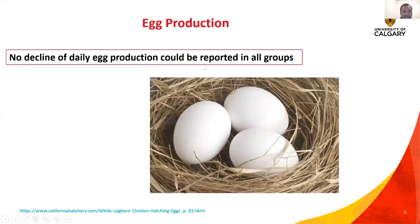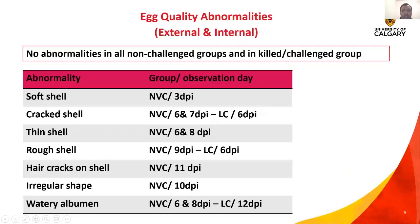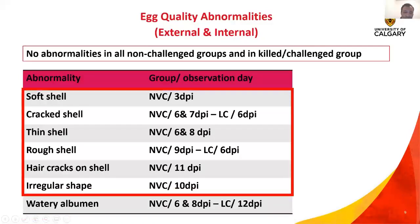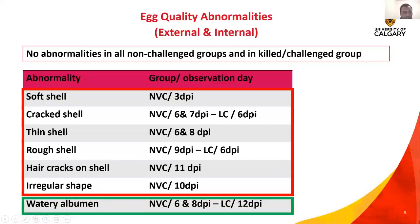For daily egg production, no decline could be reported in any group. For external and internal egg quality, we observed no abnormalities in all non-challenged groups and in the killed vaccinated challenge group. Most external egg quality abnormalities were observed in the non-vaccinated challenge group, starting from 3 DPI until 11 DPI, and were observed to a lesser degree in the LC group. Internal egg quality abnormalities were represented only by the presence of watery albumin at different time points in those two groups.